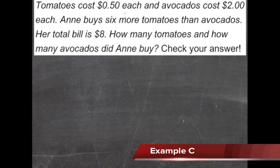Tomatoes cost 50 cents each, and avocados cost 2 dollars each. Ann buys 6 more tomatoes than avocados, and her total bill is 8 dollars.